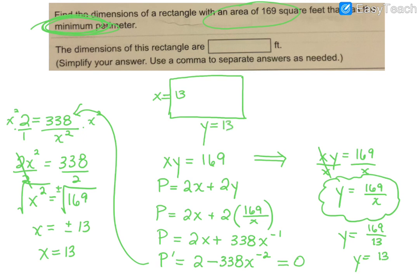You could also do a test just to make sure that is a minimum value. And with your number line, make sure that when you do test points on both sides of 13, that you've got a function that is decreasing and then increasing, which would of course make it a minimum, but it's not necessarily required. So to answer the question, the dimensions of the rectangle are 13 by 13.